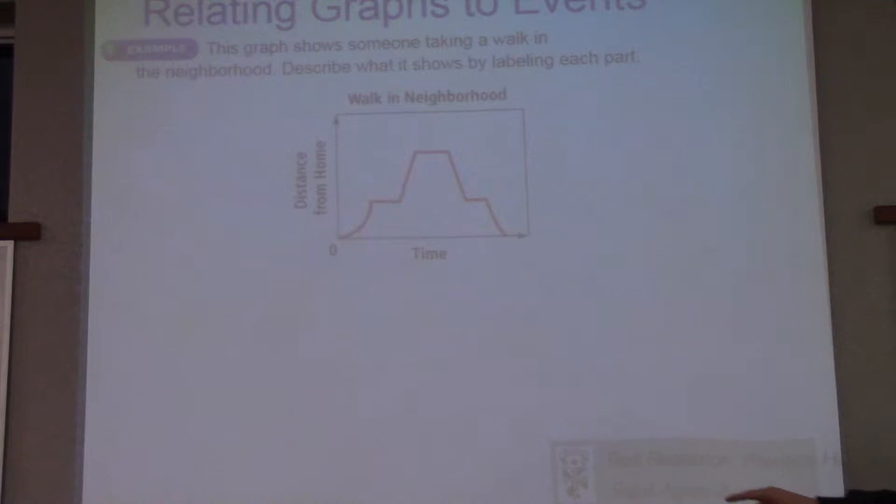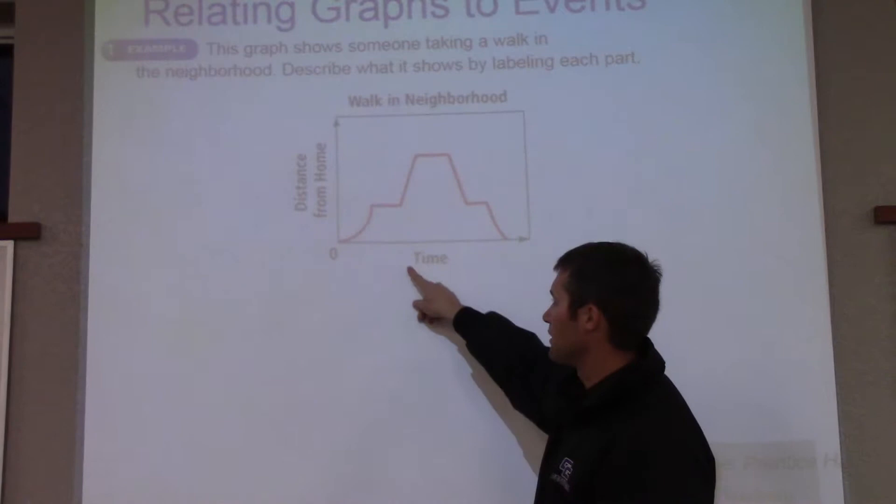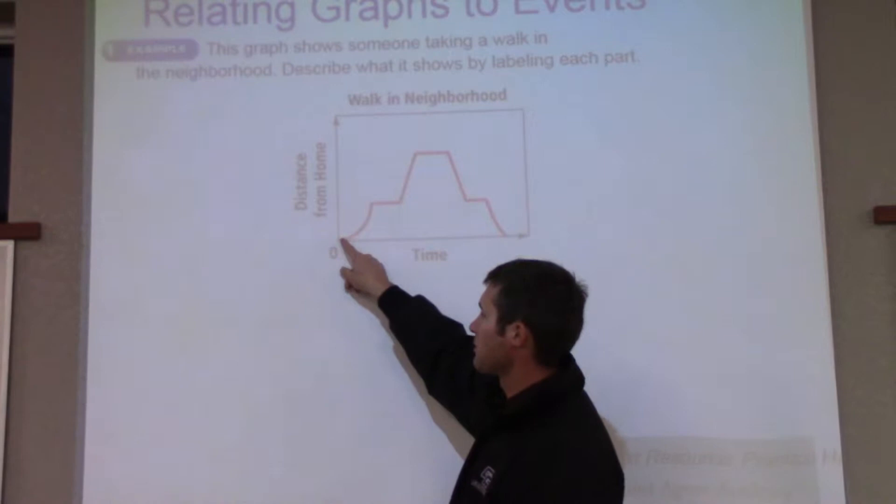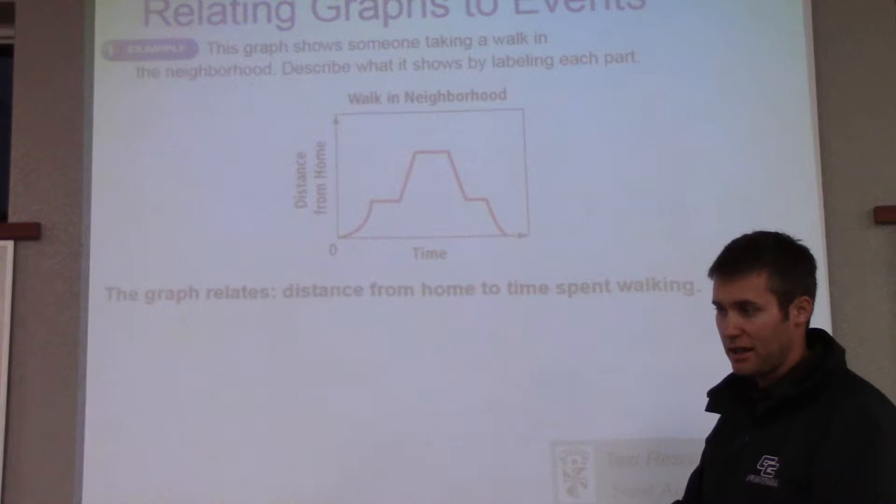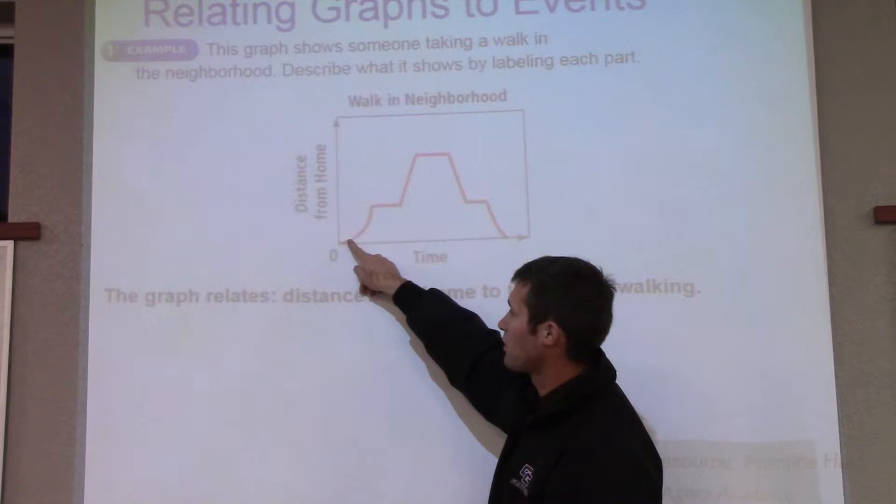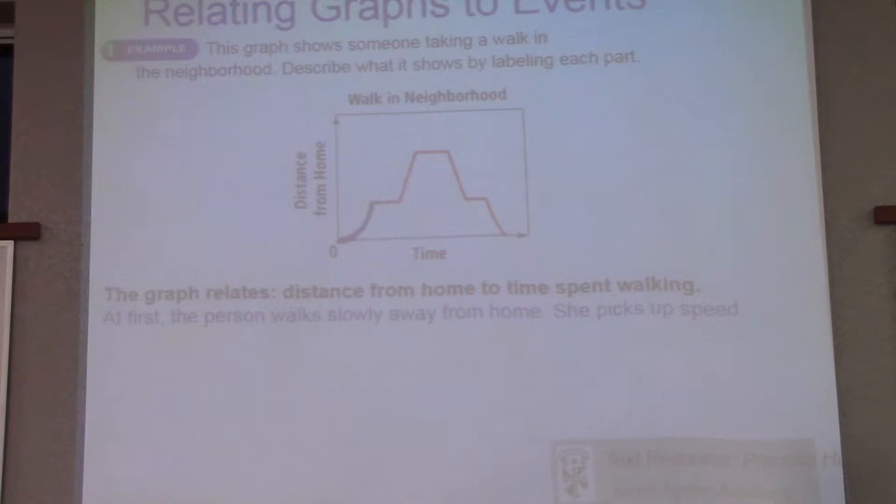This graph shows someone taking a walk in the neighborhood, describe what each one of these sections means. So if you look at times, over a period of time they're on a walk, and this is your distance from home. So if you look at this first part, what does this first part indicate? First of all, this graph relates the time in the day and then our distance from home. So the first part, as a person walks, they start off slowly, and then they get faster, they gradually get faster. That's the first part.